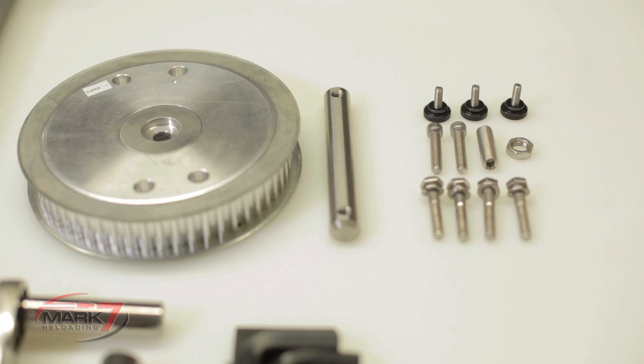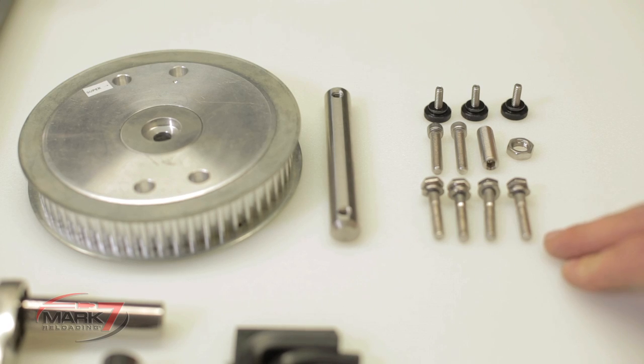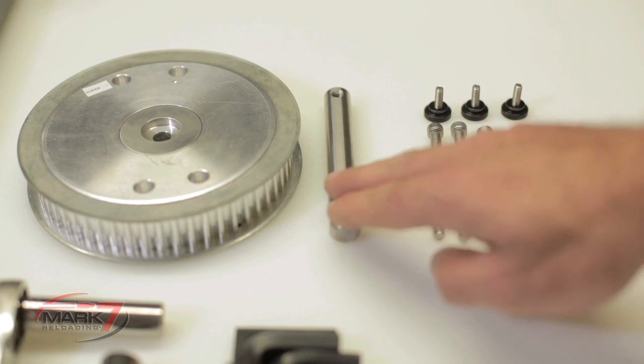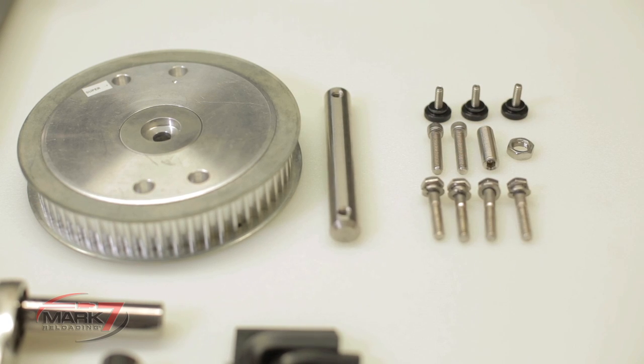The hardware that's included with the Mark 7 Autodrive has seven pieces. Four bolts are for mounting the 1050 to the base plate. Two bolts are for mounting the sprocket to the link bar on the 1050 input shaft.